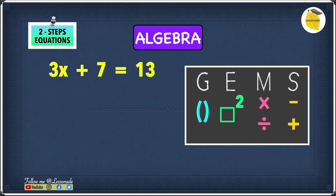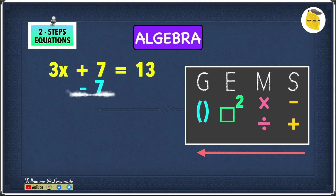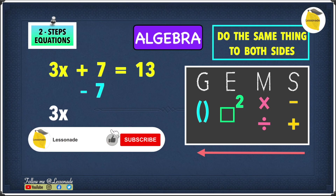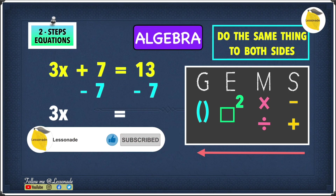Let's look at an example: 3x plus 7 equals 13. We work backwards from subtraction and addition to groups, so we undo the plus 7 first. To undo plus 7 we do minus 7, because 3x plus 7 minus 7 leaves us with 3x. Remember, we must do the same thing to both sides, so we also subtract 7 from the other side.